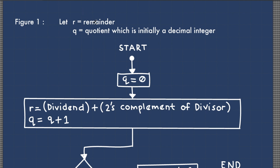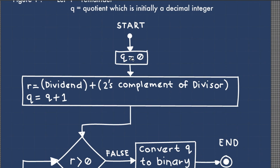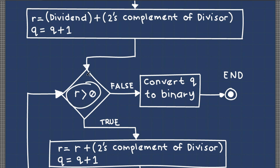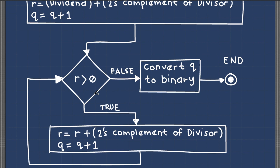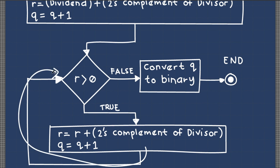In figure 1, let R equal the remainder, and Q equal the quotient, which is initially a decimal integer. At the start of the process, set the quotient to 0. Then, to get the remainder R, subtract the dividend with the divisor, or add the dividend with the 2's complement of the divisor. Add 1 to the current value of Q. Then check if the resulting remainder is positive, zero, or negative. If the remainder is greater than 0, perform repeated subtraction again: subtract R with the divisor and increment Q. Then check again if the remainder is positive, and if so, continue the repeated subtraction.